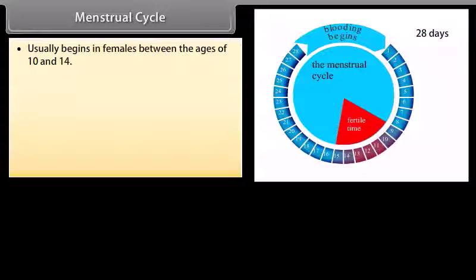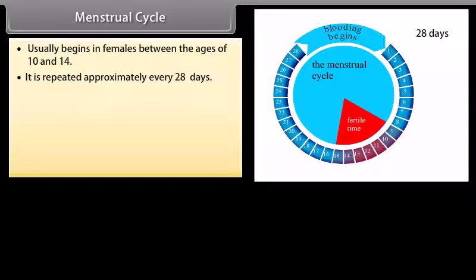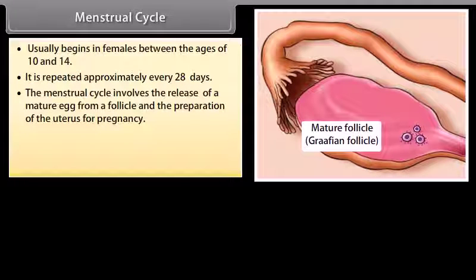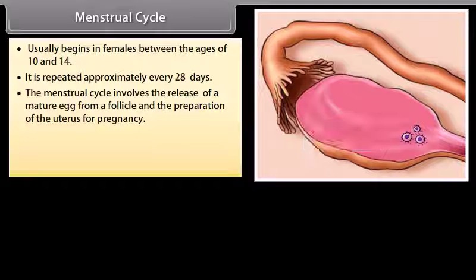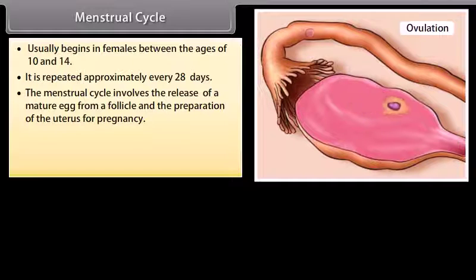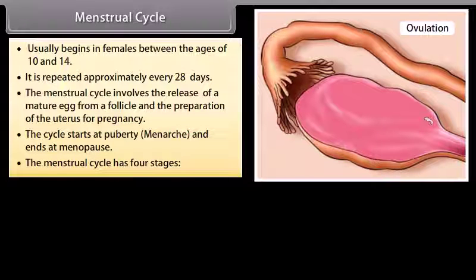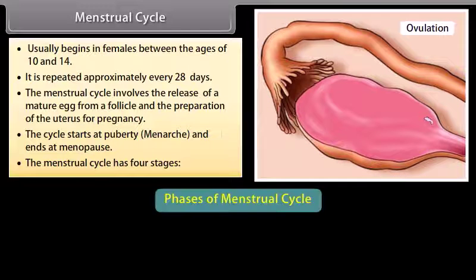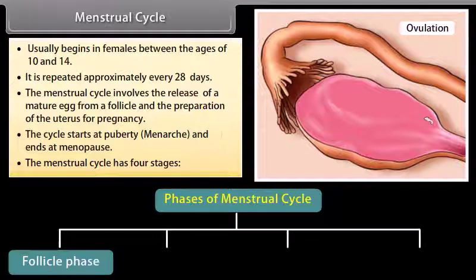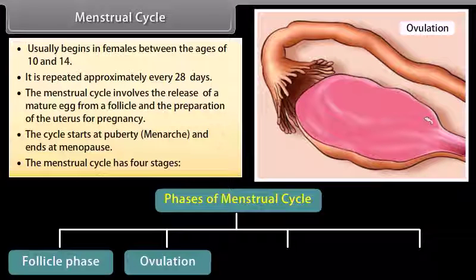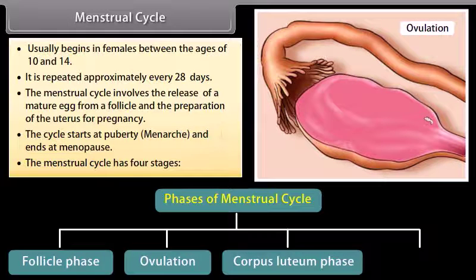The menstrual cycle usually begins in females between the age of 10 and 14, and is repeated approximately every 28 days. It involves the release of a mature egg from a follicle and the preparation of the uterus for pregnancy. The cycle starts at puberty or menarche and ends at menopause. The menstrual cycle has four phases: follicle phase, ovulation, corpus luteum phase, and menstruation.